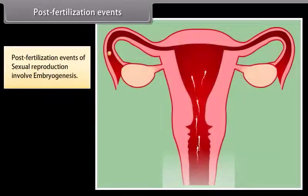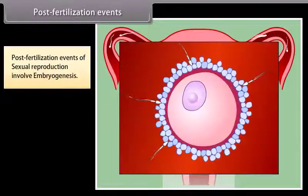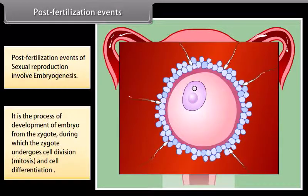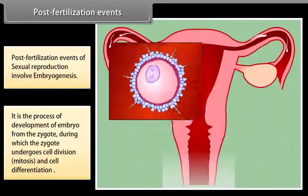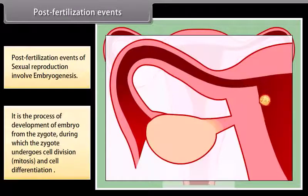Post-fertilization events of sexual reproduction involve embryogenesis. It is the process of development of an embryo from the zygote, during which the zygote undergoes cell division, mitosis and cell differentiation, as shown in the diagram.